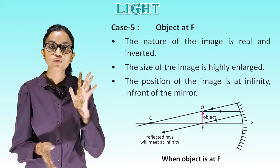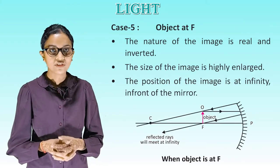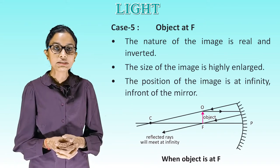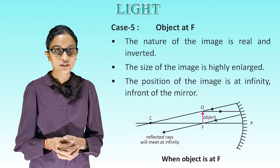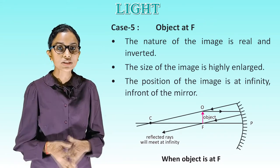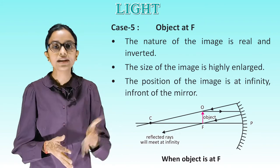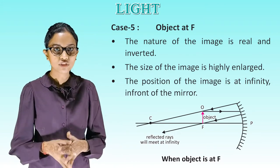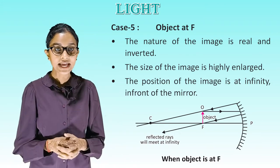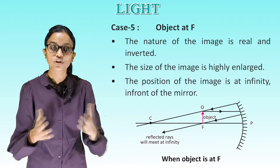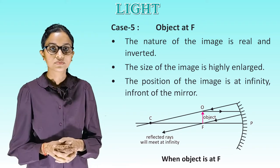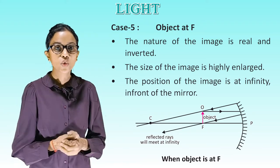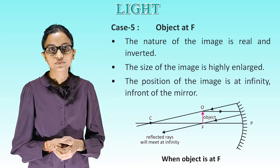Case 5 — object at F: the nature of the image is real and inverted. The size of the image is highly enlarged. The position of the image is at infinity in front of the mirror. This is the diagram showing the object at F.